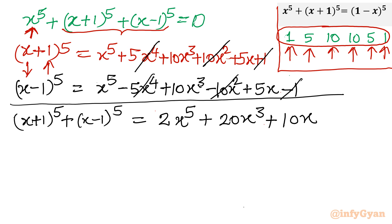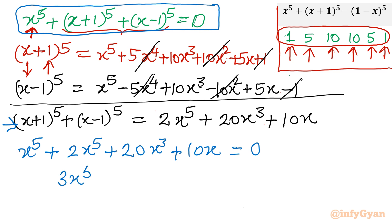Now let us write our original equation for which we were solving. Let us put the value back. So I will write x power 5 plus, in this place I will put 2x power 5 plus 20x cube plus 10x equal to 0. So 1x power 5 plus 2x power 5, 3x power 5, plus 20x cube, plus 10x equal to 0.